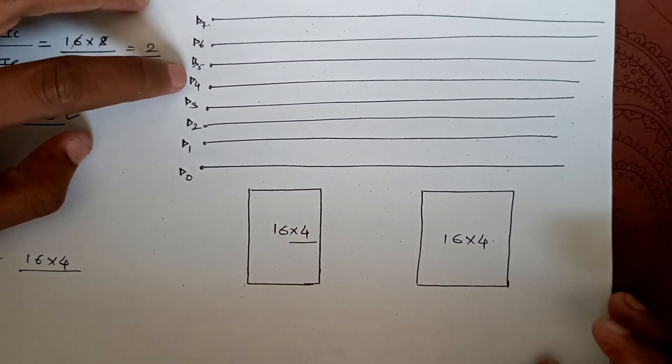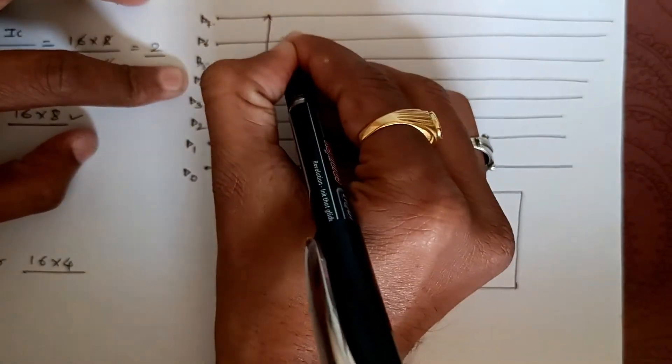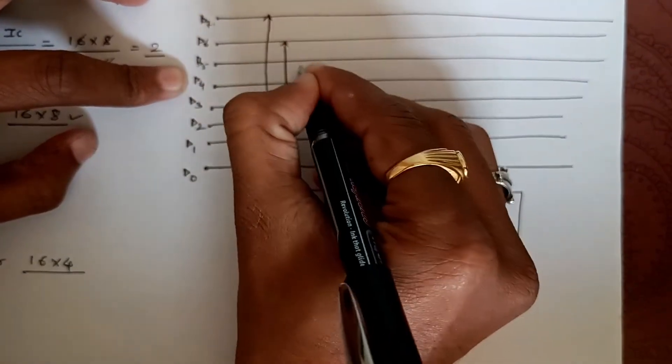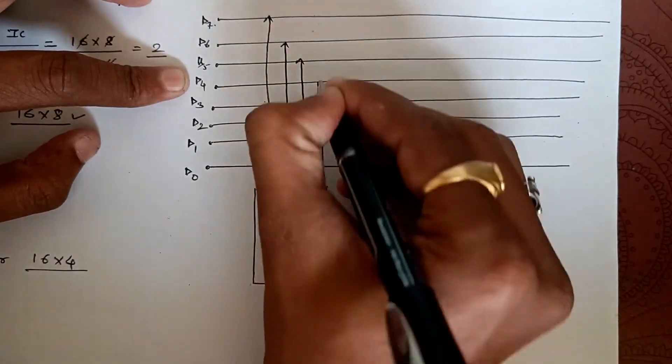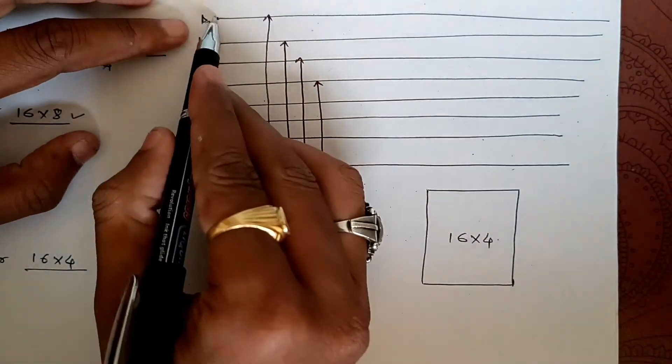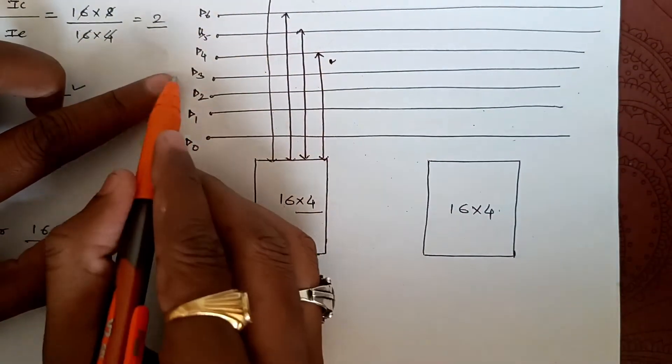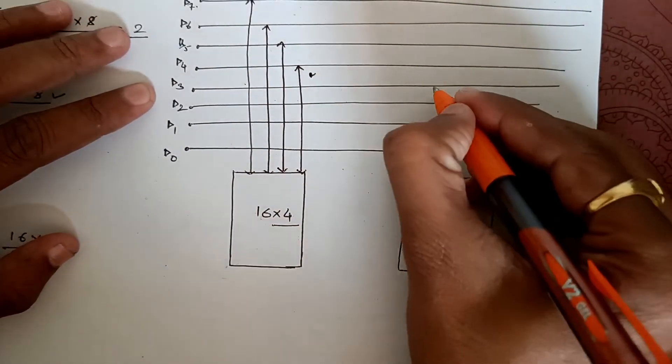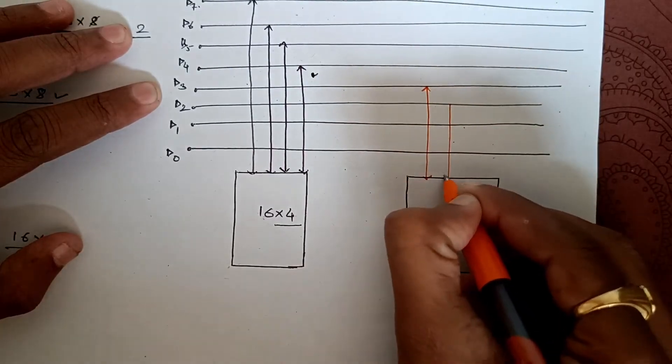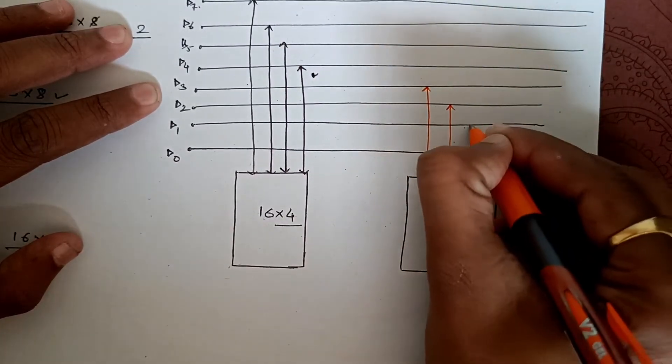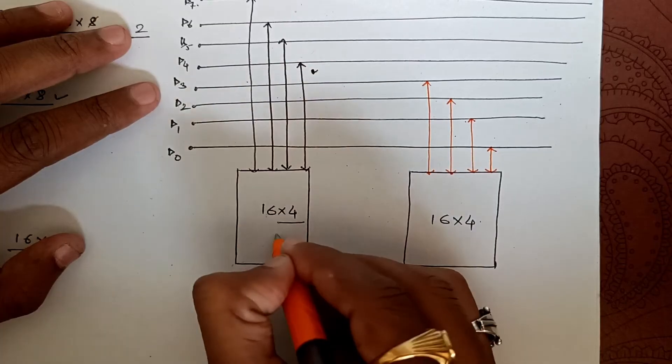Let's start with this IC. We'll connect the first 4 data lines: d7, d6, d5, and d4. So I'll be connecting 7, this is 6, this is 5, and this is 4. Similarly the remaining d3, d2, d1, d0 we'll connect to the second IC. So d3, d2, d1, and d0.